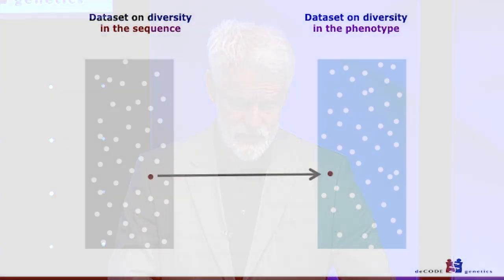What we have been doing — and what people are doing who are trying to make discoveries of variants in the sequence that affect human diversity — is that we work with two datasets: a dataset on diversity in sequence, and a dataset on diversity in phenotypes, and then we look for non-chance associations between data points in the two datasets. It's very important to recognize that still today, most of that search for non-chance association has to be done more or less in a manual manner.